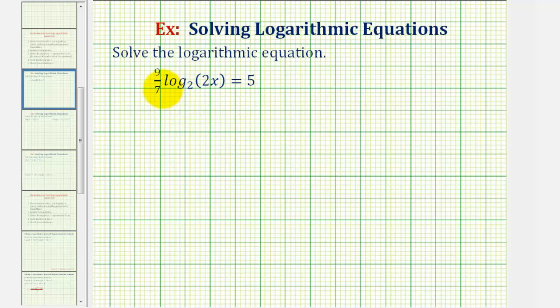So looking at our equation, notice how we have nine sevenths times log base two of two x. So to isolate the logarithm, we'll multiply both sides of the equation by the reciprocal of nine sevenths, which would be seven ninths. So we'll have seven ninths times the left side of the equation equals seven ninths times the right side of the equation. Let's go ahead and write five as five over one.